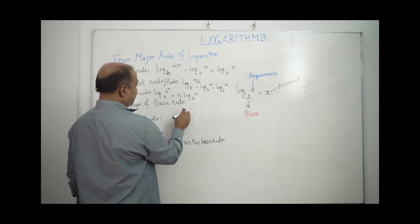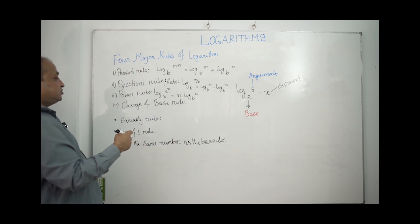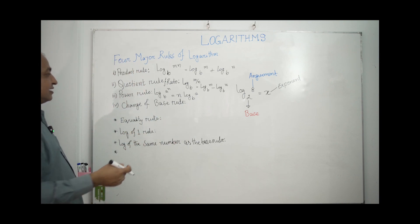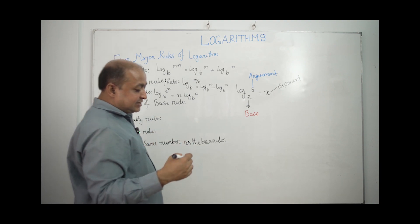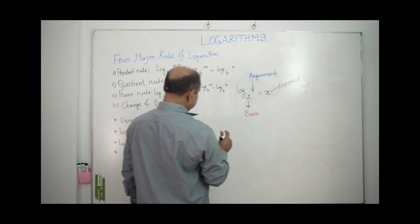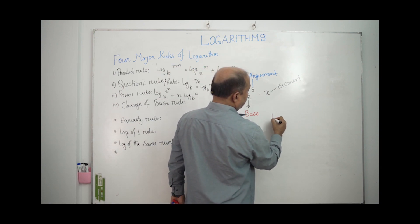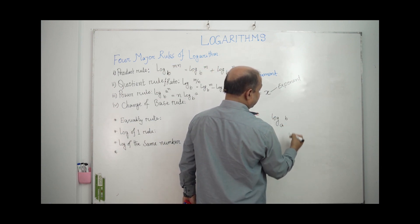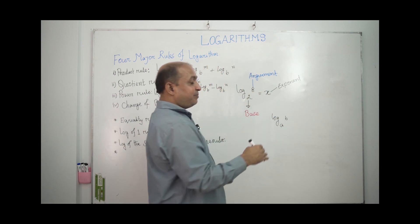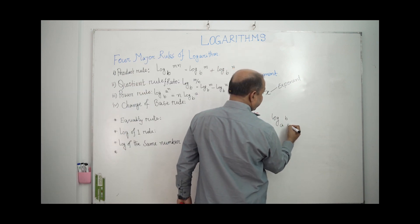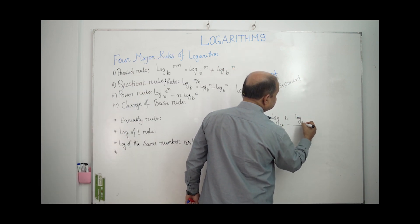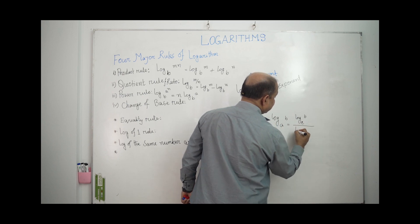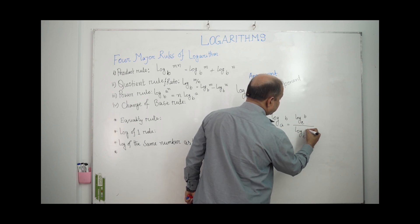The change of base rule. How do we apply the change of base rule? If we have log base B of A, we can rewrite it as log base C of B divided by log base C of A, where C is any new base we choose.